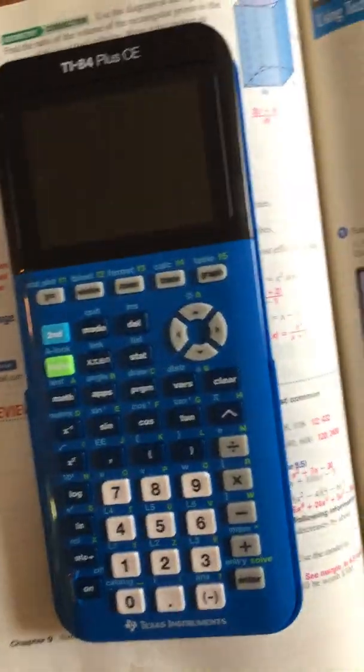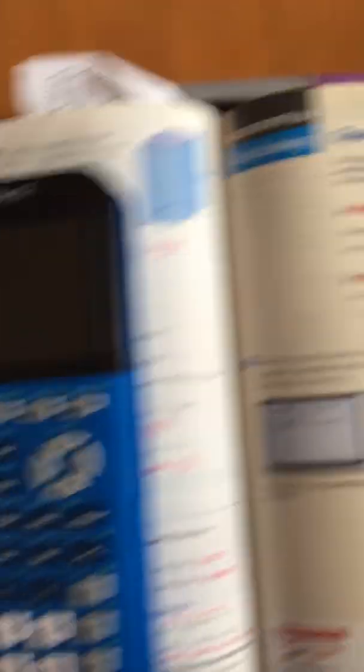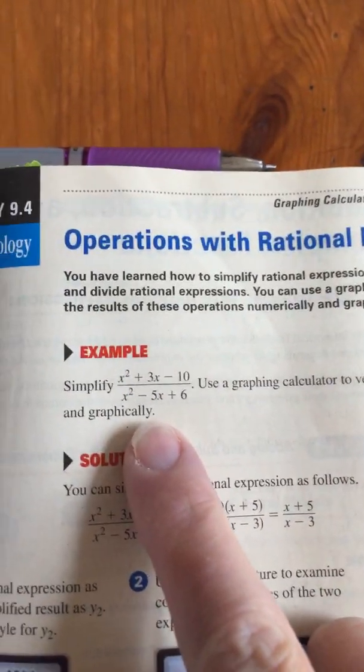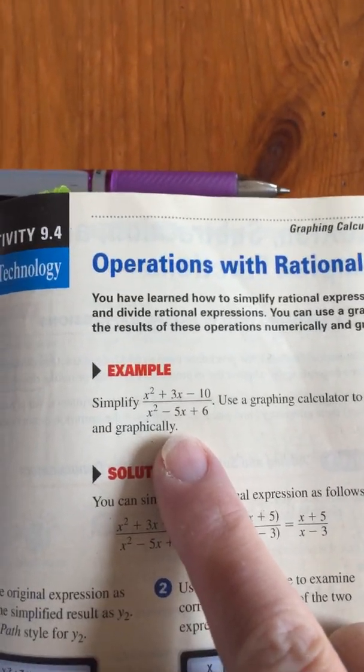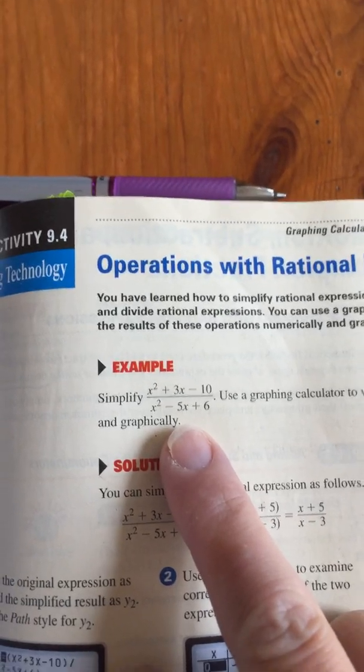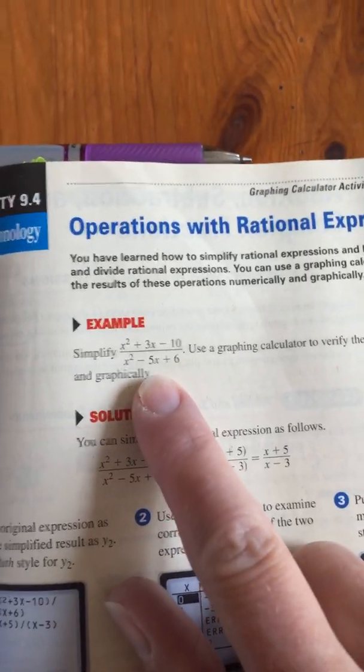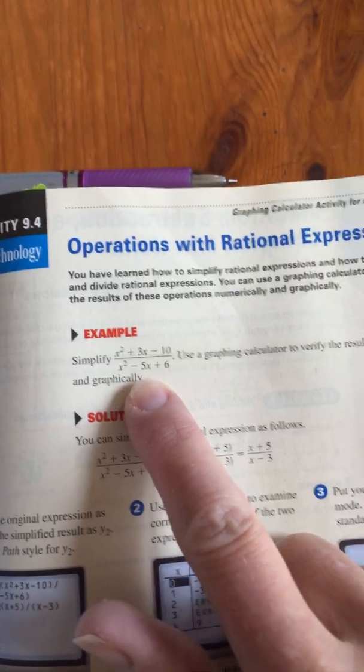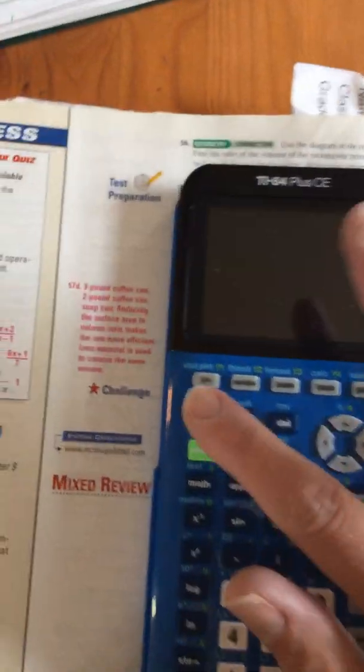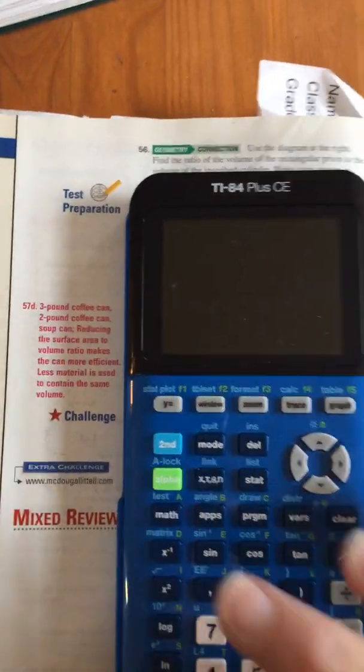What we're going to do now is use our graphing calculator to check our work when we have a problem that looks something like this. It'll actually work for any problem you have, including any crazy problem on the SAT or the ACT that you don't know how to do. You can try the answers, you know, they only got so many answers.